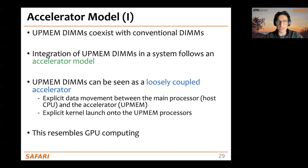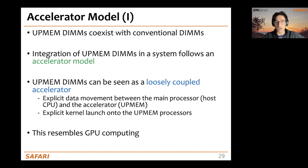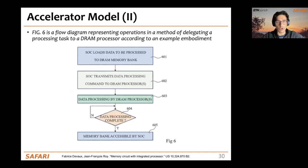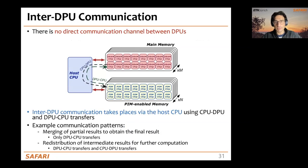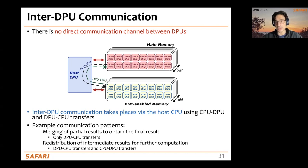Tasklets can synchronize and communicate using synchronization primitives and WRAM, which is the scratchpad for operands. Programming the UPMEM PIM system requires the accelerator model: you must explicitly move data from the host processor's memory to the accelerator's memory and explicitly launch kernel execution on the DPUs. While the DPUs process data, the CPU cannot access the MRAM banks and continuously checks for kernel completion.